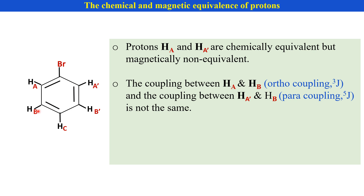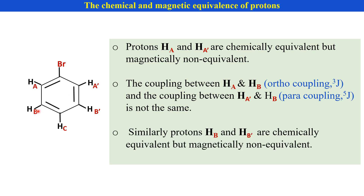Similarly, HB and HB' protons are also chemically equivalent but magnetically non-equivalent. J of AB is not equal to J of A'B — that is, the coupling constants are different.